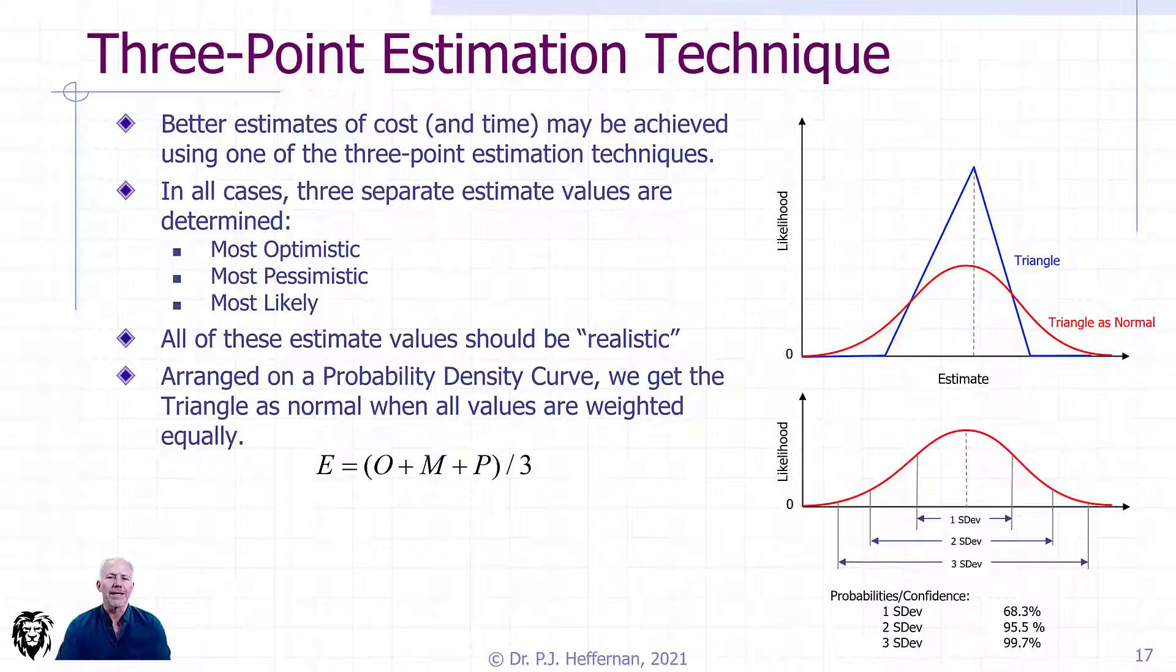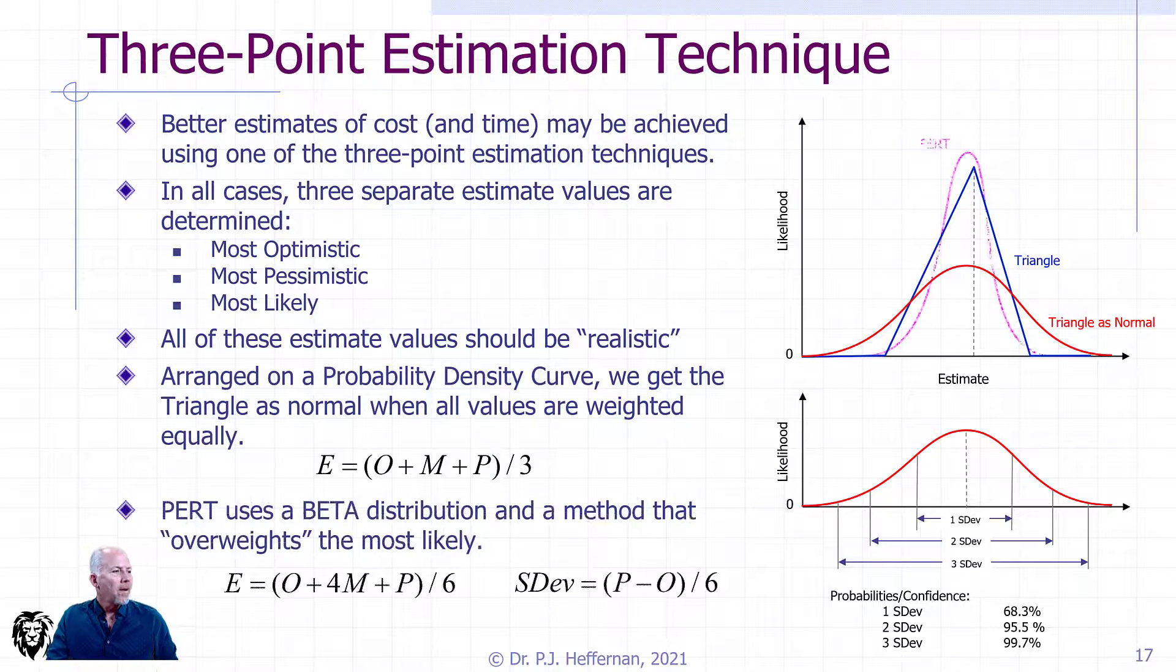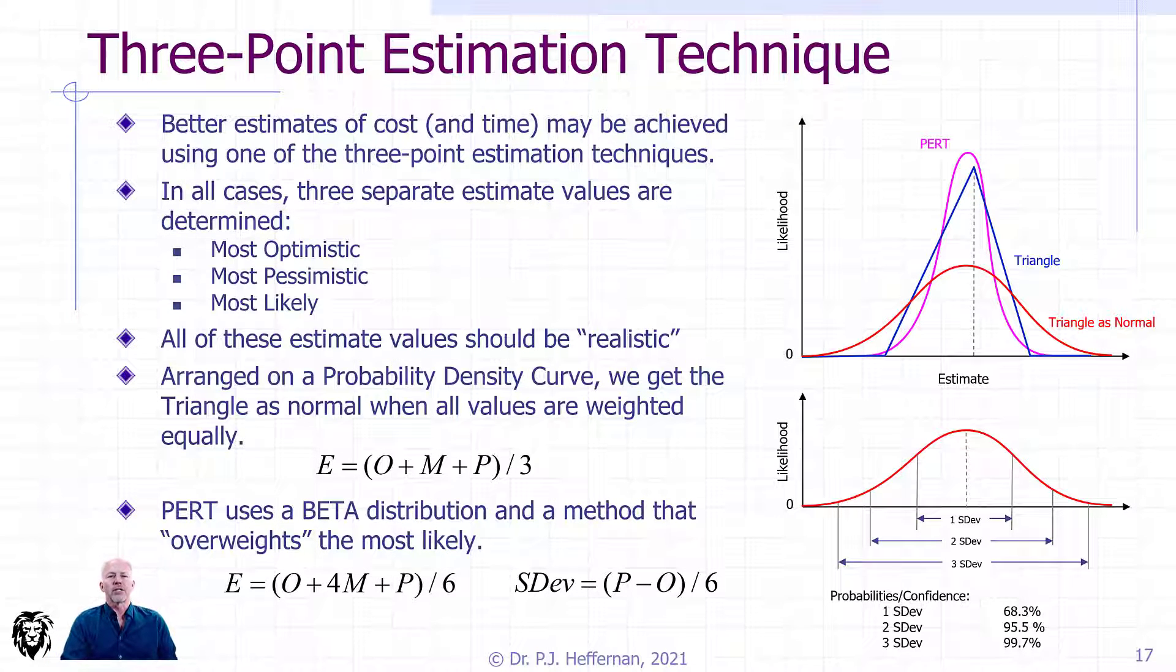PERT, which typically uses a beta distribution, I certainly have seen some writings where it also uses a normal distribution. I've only ever used it with a beta distribution. And it also overweights the most likely.